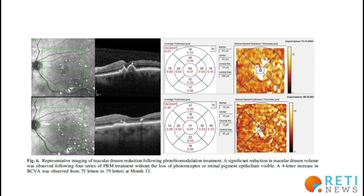Let's look at the results of photobiomodulation presented in the LightSite 3 study. One figure shows an improvement, but I first draw attention to the three pigment epithelial detachments and very thick choroid before treatment, which may be associated with polypoidal vasculopathy. In Figure 6, showing a theoretical regression of drusen after photobiomodulation, the nerve fiber layer before treatment is thicker than after treatment in the B-scan. Also, a scale visible in the pre-treatment photo is removed from the post-treatment B-scan photo, indicating some manipulation of the figure.